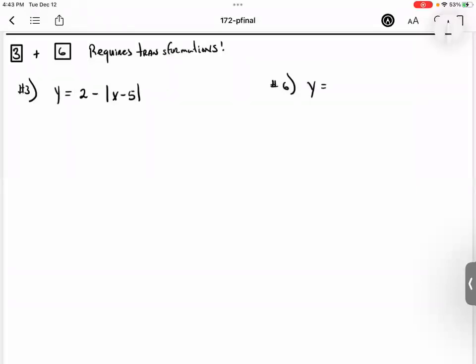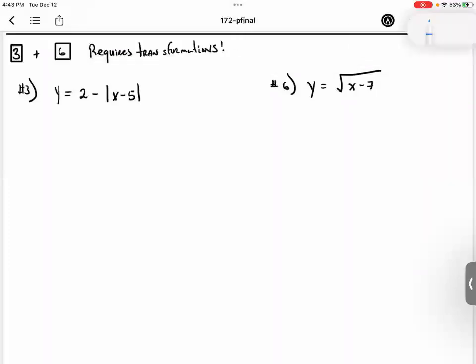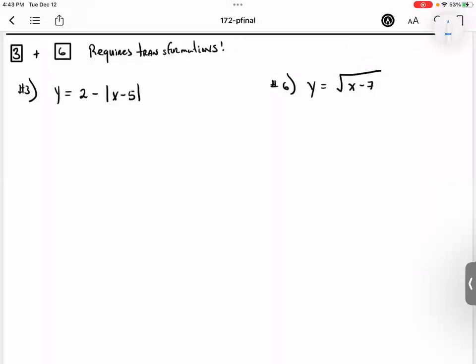So to make the graph for number three, there are three things that we have to talk about: the transformation or the translation for your graph. And you're just going to know the basic shape. So what is the basic shape for the absolute value function?